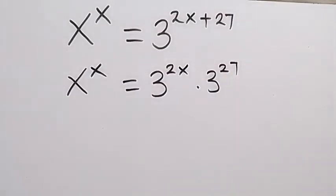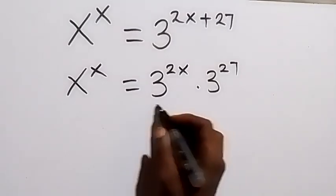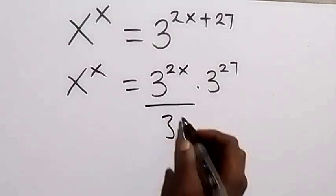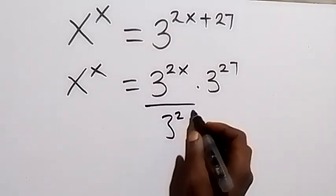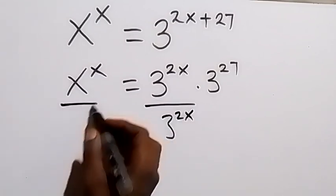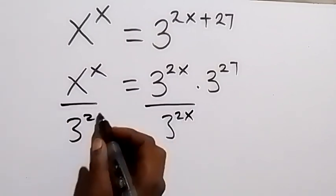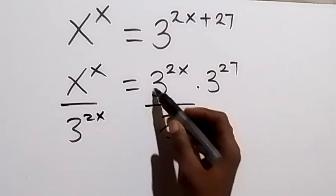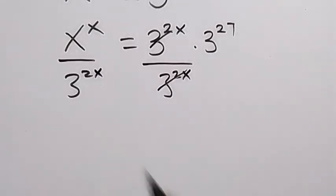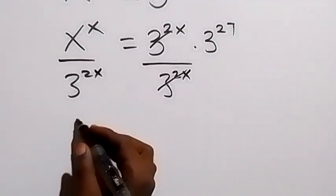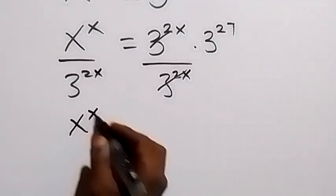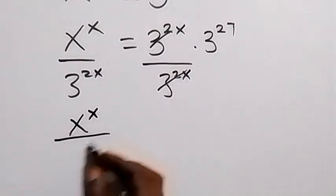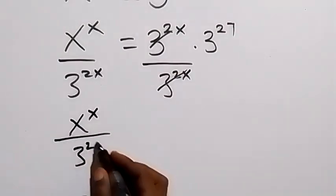This follows from the law of indices. In the next step, let's divide both sides by 3 raised to power 2x. Dividing this side by 3 raised to power 2x as well, then 3 raised to power 2x cancels each other, such that we can write this as x raised to power x over 3 squared.